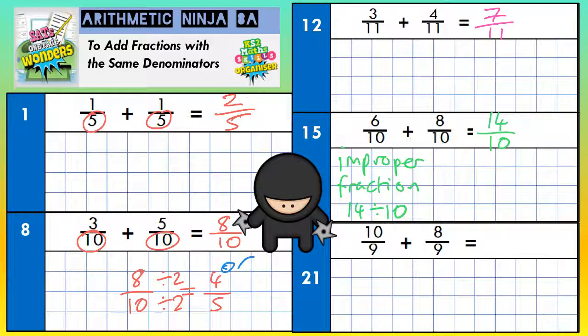Well, fourteen divided by ten, how many tens go into fourteen, is one. One ten goes into fourteen with four left over. So it's one remainder of four. But because we're dealing with tenths, that remainder is out of tenths as well. So it's one and four-tenths. So the answer to number fifteen, you could either do fourteen-tenths or one whole one and four-tenths. So they both mean the same thing.